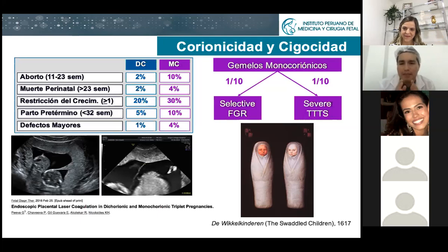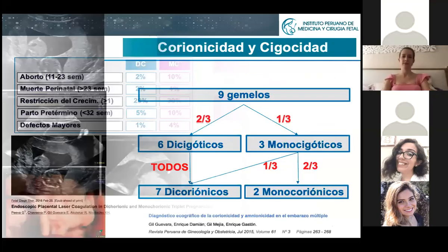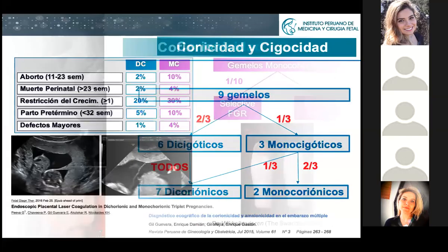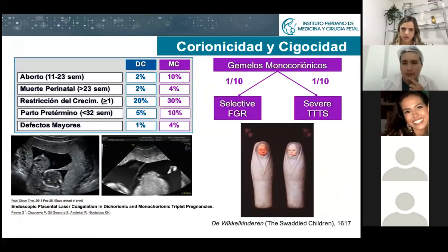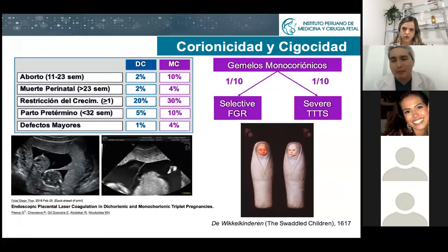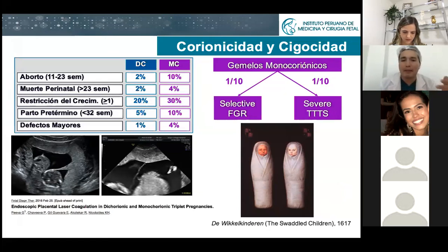I put such a big emphasis on this because the counseling I'm going to give the patient will change. When you have TTTS, you have the opportunity to save both babies if you do fetal surgery. But if you do fetal surgery when you have selective FGR, it's not to save both babies — it's just to save or protect the bigger baby from the imminent death of the smaller one. That's the difference. That's why it's so important to identify each condition, because the parents need to know the possible outcome after surgery.